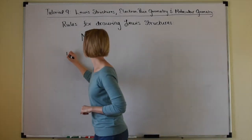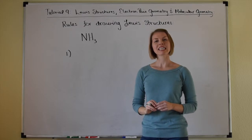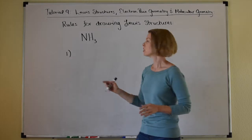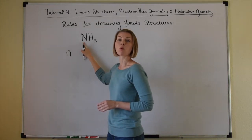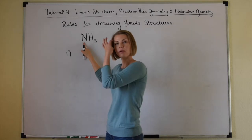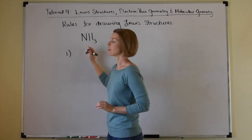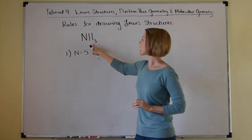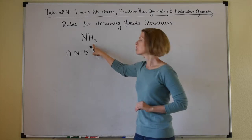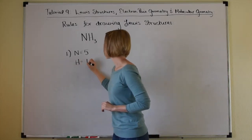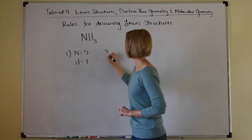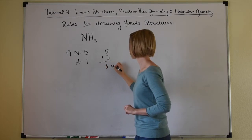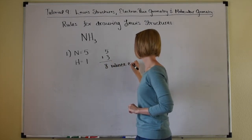Rule number one: add up all the valence electrons for the atoms involved in bonding. For ammonia, we have one nitrogen — nitrogen is in group 5A, so it has five valence electrons. Each hydrogen is in group 1A, so each brings one valence electron. Five plus three gives us eight valence electrons total to work with.